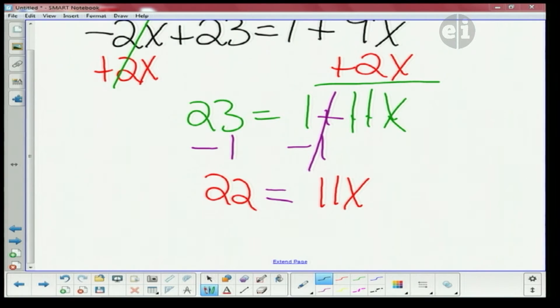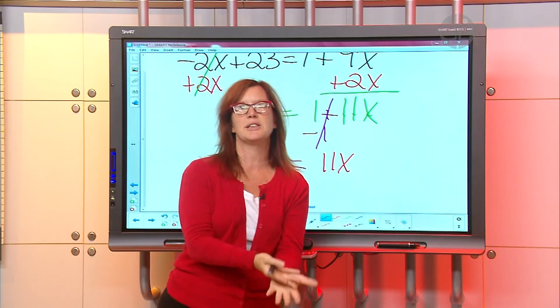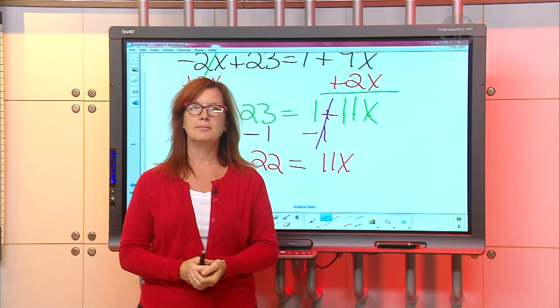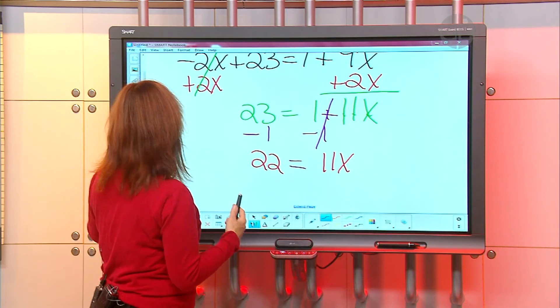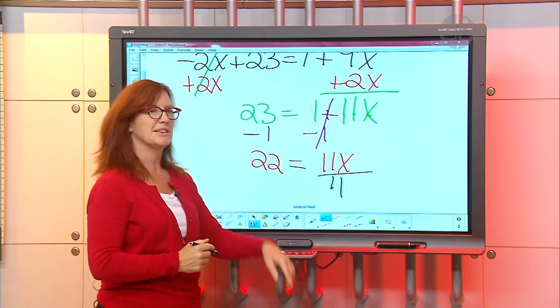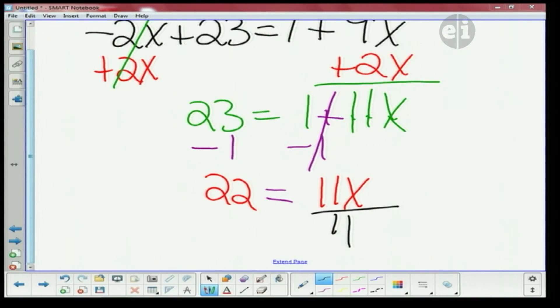So we've got 22 equals 11x. The only thing that's bothering that x is that 11 times it. So what would be the inverse of multiplying by 11? Divide by 11. Divide, right. You just do the opposite. I've got a teenager who does that frequently, does the opposite of whatever I tell her to do. So this problem is just like doing that. So we're gonna divide this side by 11. What are we gonna do to the other side? Divide it by 11. Divide it by 11. Great.